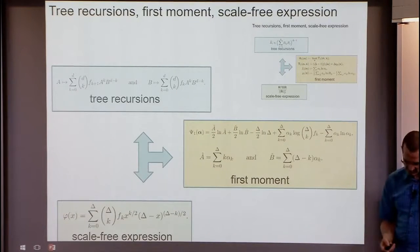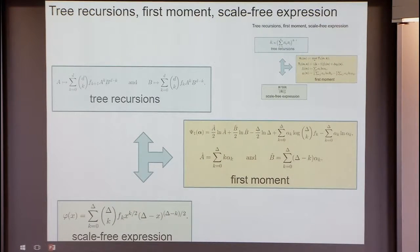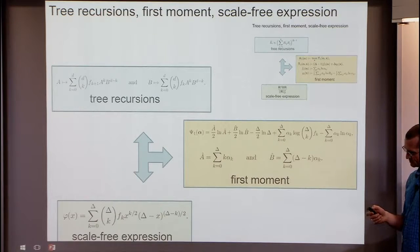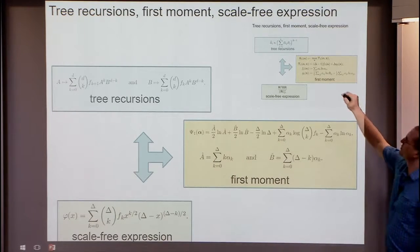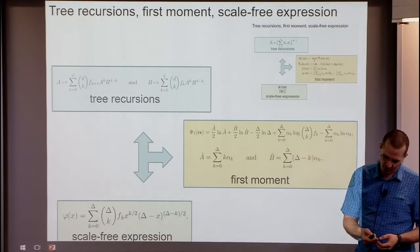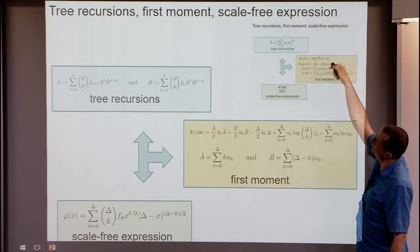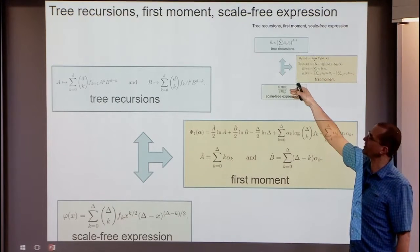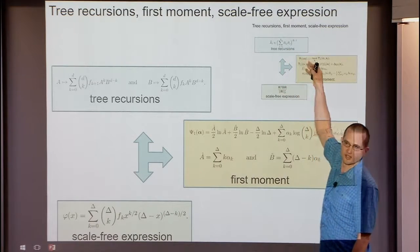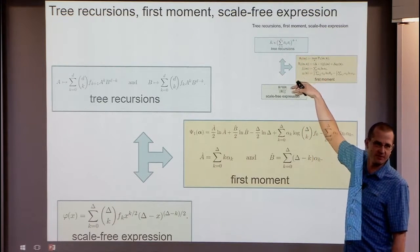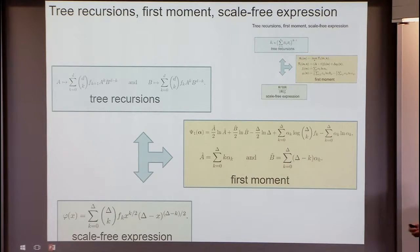Sometimes the second moment doesn't work — but why it fails for delta-regular graphs and the Potts model, I have no clue. There are three ways of looking at the model: through the first moment, through a scalable expression, and through tree recursions. Each view gives different power. Interestingly, you can do the same for Holant problems: look at the first moment, run tree recursions with just two variables, and get a scalable expression.